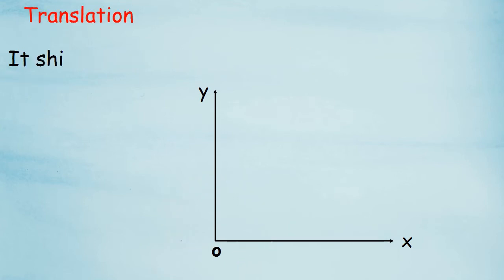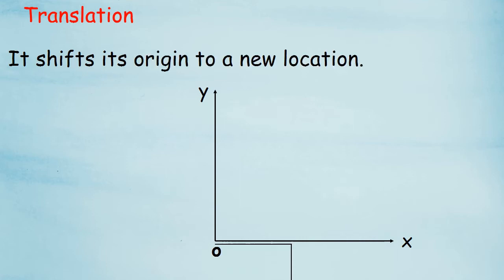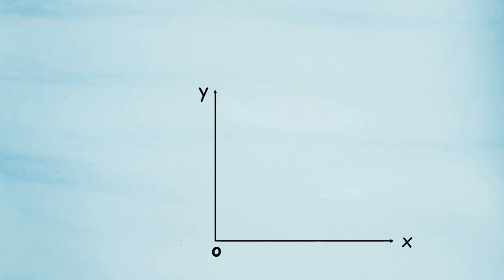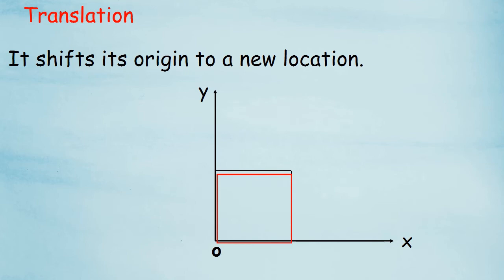This one is translation. It shifts its origin to a new location, same as the prior image. O was the origin, X and Y are the coordinates, same square box. Then it shifts its position to the upward direction. This is translation.